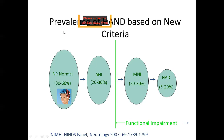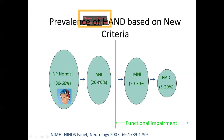Prevalence of HAND based on the new criteria: if neuropsychological testing is done on the whole HIV population, 30 to 60% will have normal scores; asymptomatic neurocognitive impairment will be seen in 20 to 30%; mild neurocognitive impairment in 20 to 30%; and HIV associated dementia in only 5 to 20%. So the incidence of HIV associated dementia is much less, however as many as 20 to 30% will have mild neurocognitive impairment with functional impairment.